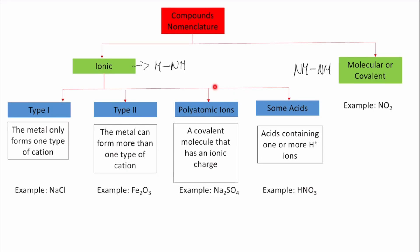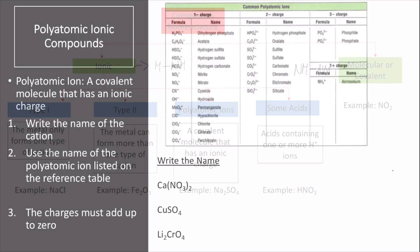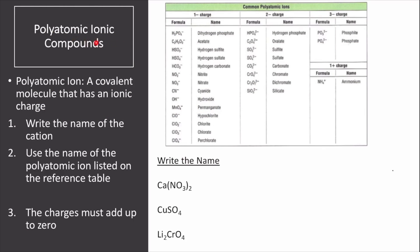The following two-part video is about the nomenclature of polyatomic ionic compounds and some acids. Polyatomic ionic compounds are compounds that have more than two types of elements, where you can have a cation with an anion that is polyatomic. The acids we will focus on are the ones that have the hydrogen cation and the anion is polyatomic — they may or may not have oxygen. Let's start with polyatomic ionic compounds.